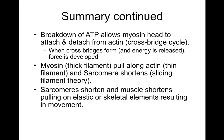When cross bridges form and energy is released, force is developed. The myosin — the thick filaments with all the little heads — pulls along the actin, the thin filaments, and the sarcomere shortens: that is the sliding filament theory. When sarcomeres shorten, the muscle shortens, pulling on the elastic and skeletal elements, resulting in motion.